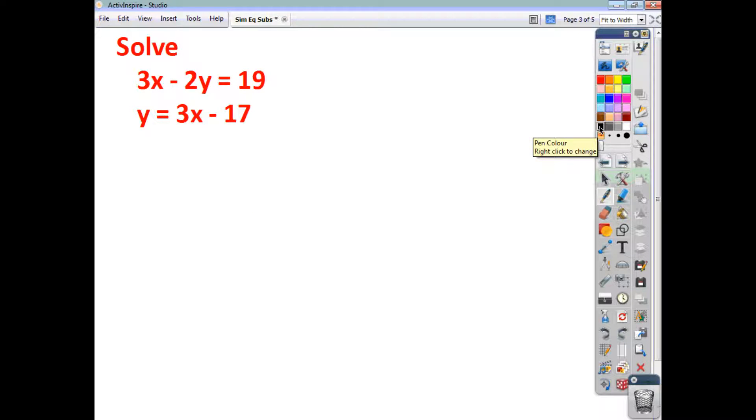Now, this example is different. The last one we looked at, both equations had a subject of y. In this example, only one of them has a subject which is a single letter. But again, take your single subject and just say, well, y is equal to y. If y is equal to y, then that must mean that because y is equal to 3x minus 17, then I can just replace this y here with 3x minus 17.